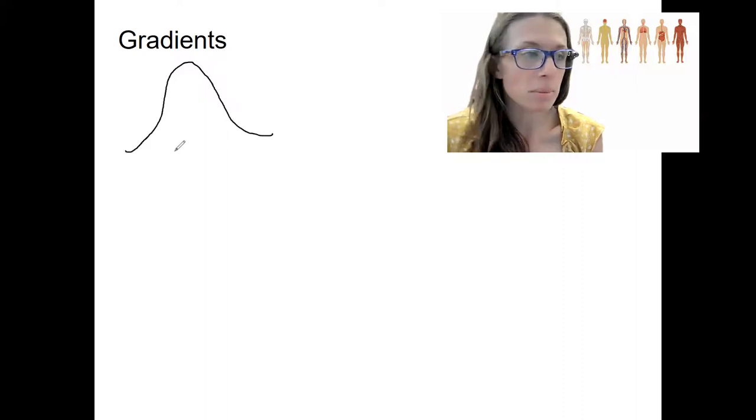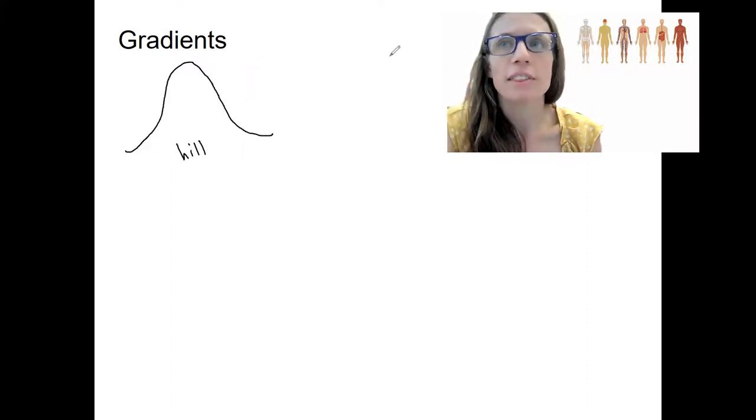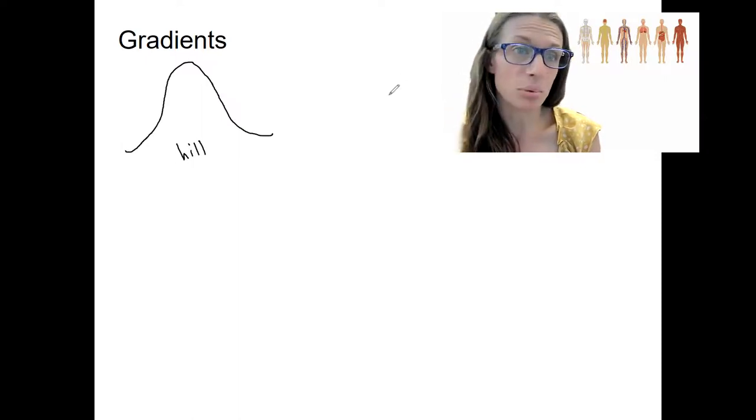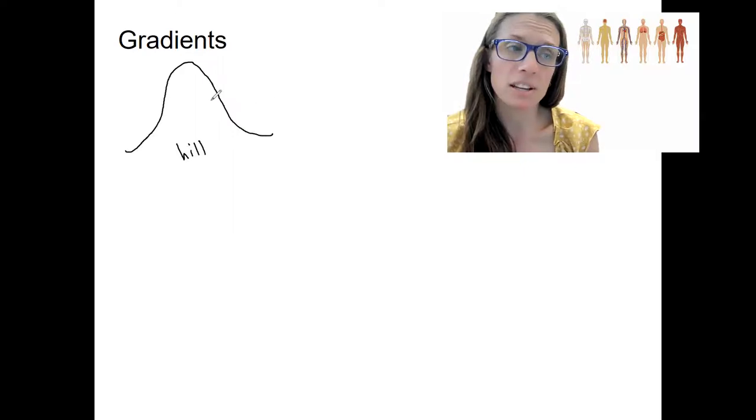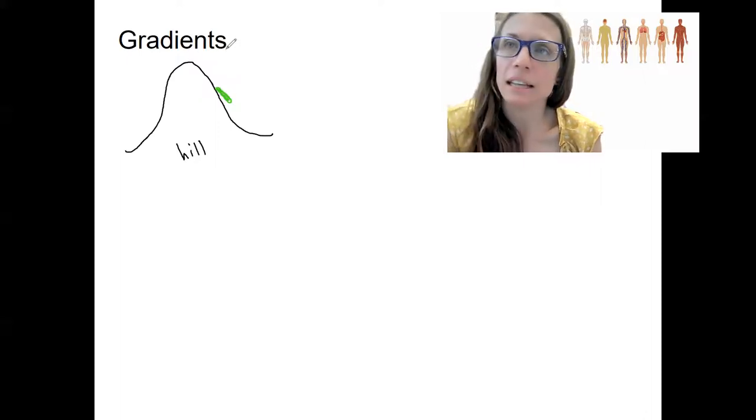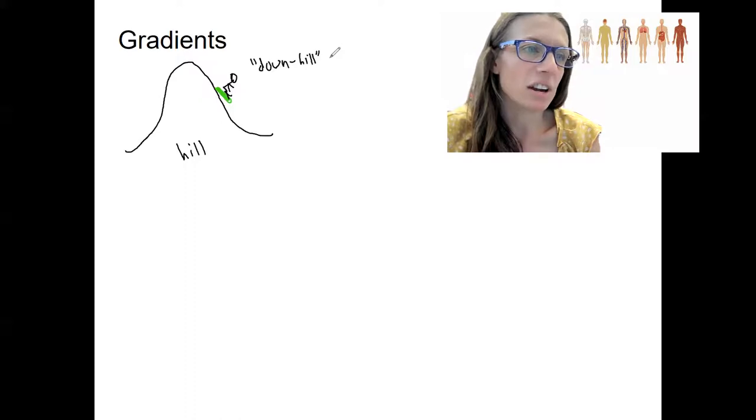This is clearly a hill. I'm going to label it hill in case you don't know that. There's a downhill side and uphill side. You've heard of like the gradient of a hill. So let's use that as an example and use the terminology for gradients is pretty intuitive. So when we're going downhill, let's pretend it's winter. It's someone sledding. Here is someone sledding down the hill.